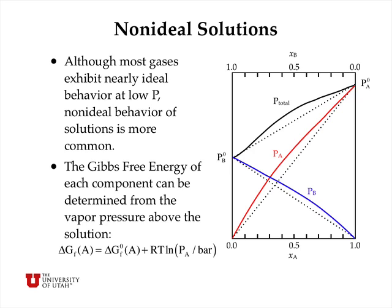The Gibbs free energy of each component, A and B, can be determined from the vapor pressures above the solution. This is a very powerful concept because each component in the liquid solution must be in equilibrium with its own vapor. We can determine the thermodynamic activity of the vapor and therefore the Gibbs free energy of the vapor. And if that equilibrium occurs, the vapor is in equilibrium with the liquid and the delta G between those two phases must be zero. So we can use the vapor phase data to determine what the delta G is in the liquid phase.